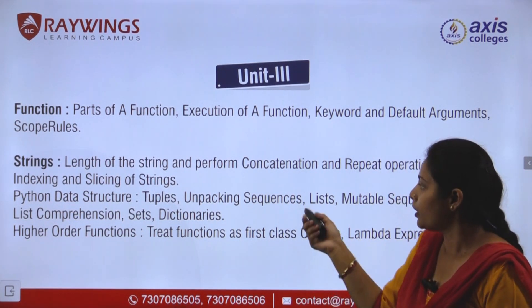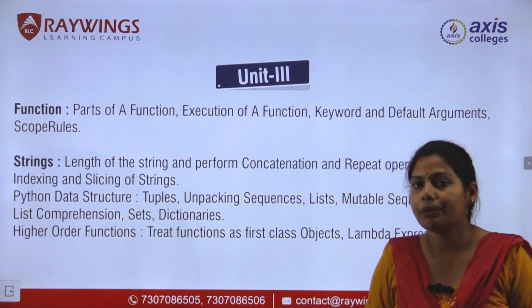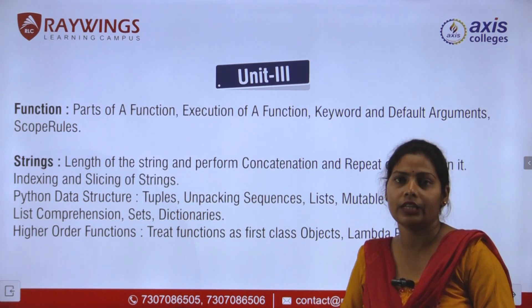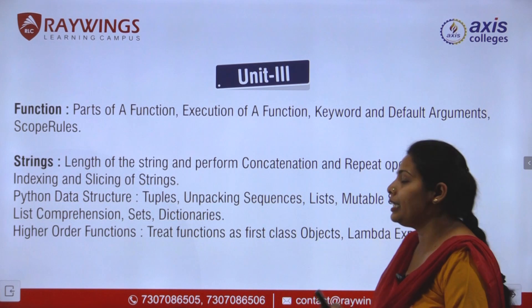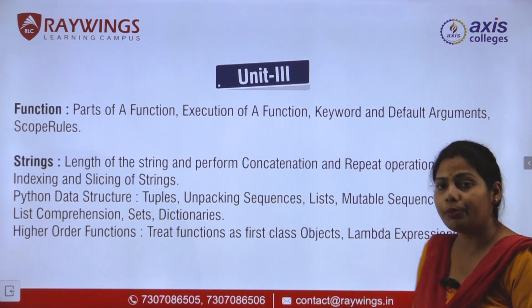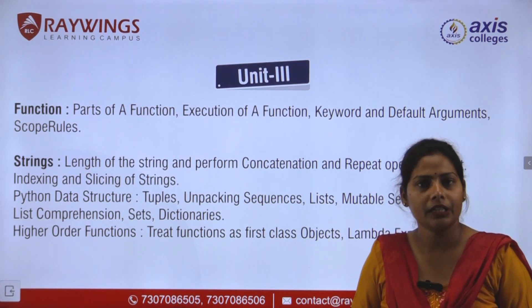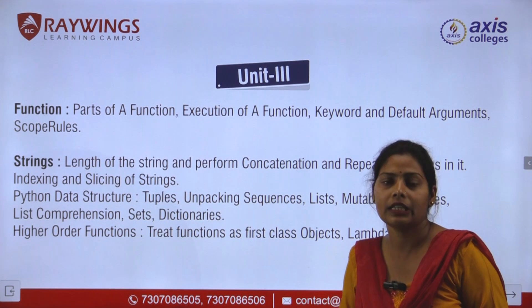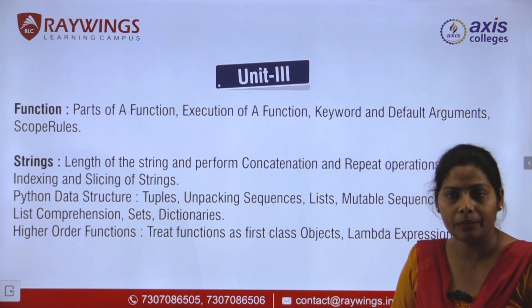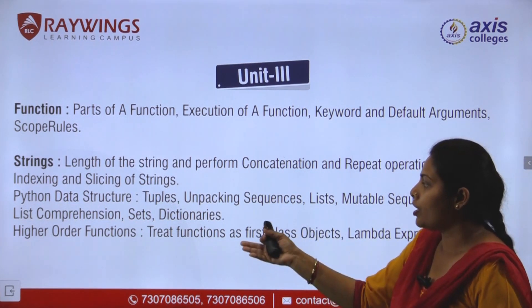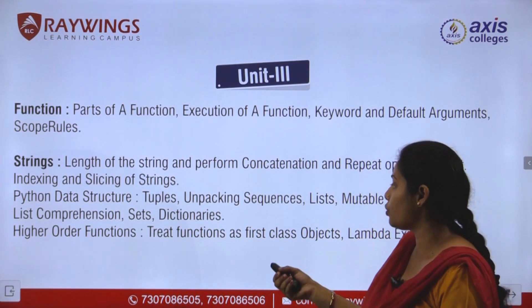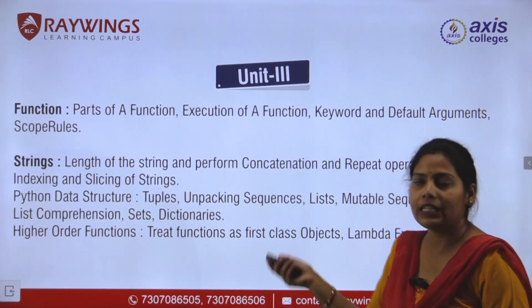A tuple is an immutable data type. Unpacking sequences means how to retrieve data from an ordered collection using indexing. A list is similar to an array in C and Java — it is a mutable data type, meaning changes can be done: we can add and remove elements. Immutable means if we define the structure initially, we cannot make any changes — we cannot delete or add elements. Higher-order functions treat functions as first-class objects. Lambda expressions will also be covered in Unit 3.